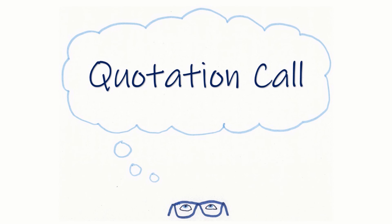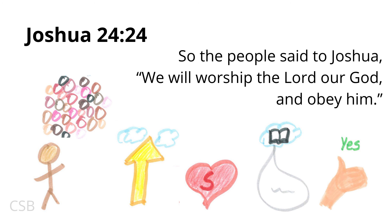We will now have the quotation call. I will give the reference of a verse. If you know the verse, step forward. Then give the verse and the reference. And we'll do that together as a practice. Joshua 24:24. Start. [Pause for practice] Joshua 24:24. 'So the people said to Joshua, we will worship the Lord our God and obey Him.' Joshua 24:24.